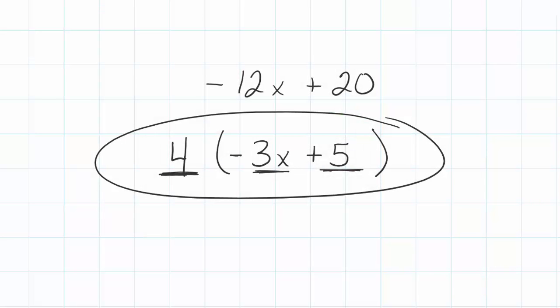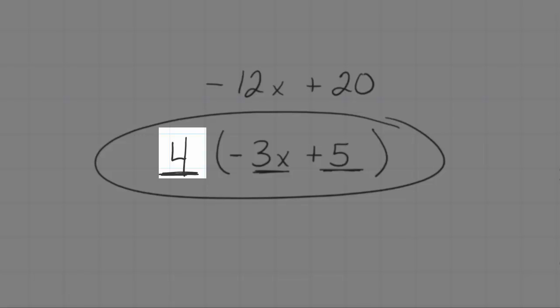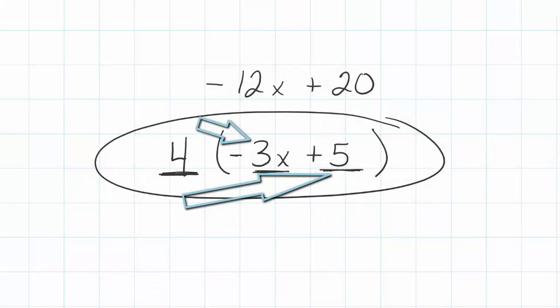Just remember, factoring is what we can pull out from an expression. Distributive property is taking a number outside the parentheses and distributing it, or giving it to each of the terms inside the parentheses. And when we give it to it, we've got to multiply that outside term times our inside terms.